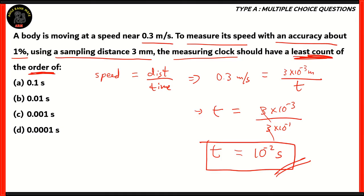However, our question is to find the least count. Well, how do we find the least count? Remember, we need to measure its speed with an accuracy about 1%. Now, what does that mean? So, for us to measure with an accuracy about 1%, that means our least count should be 1% of the time period.